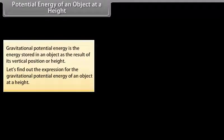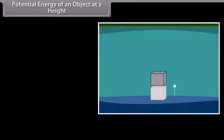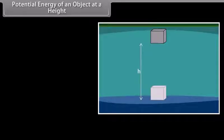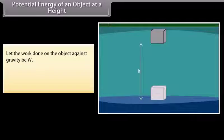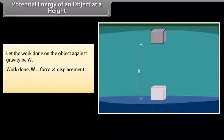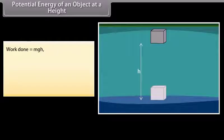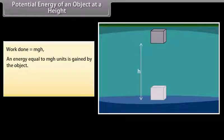To find the expression for gravitational potential energy, consider an object of mass m raised through a height h from the ground. A force is required to do this; the minimum force equals the weight of the object. The object gains energy equal to the work done on it. Work done W = force × displacement = mg × h = mgh. Since work done equals mgh, energy equal to mgh is gained by the object — this is the potential energy.